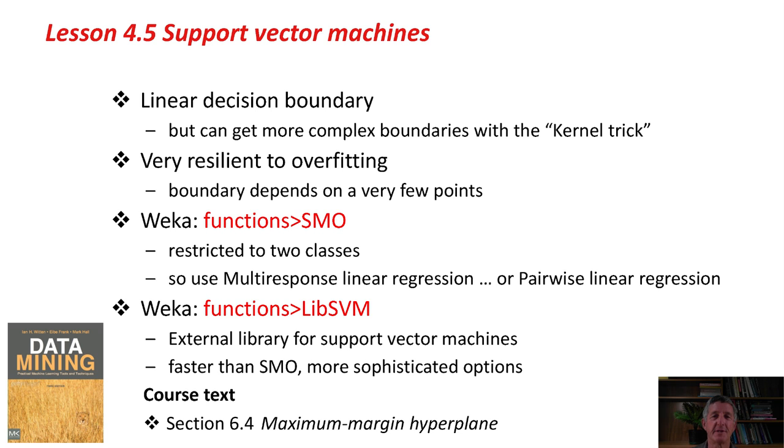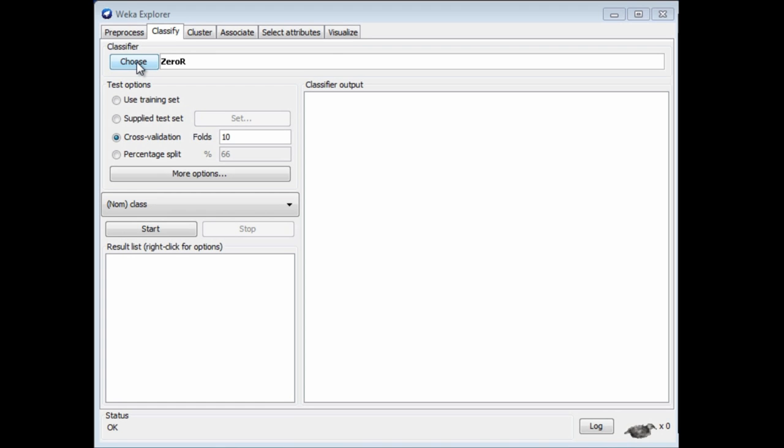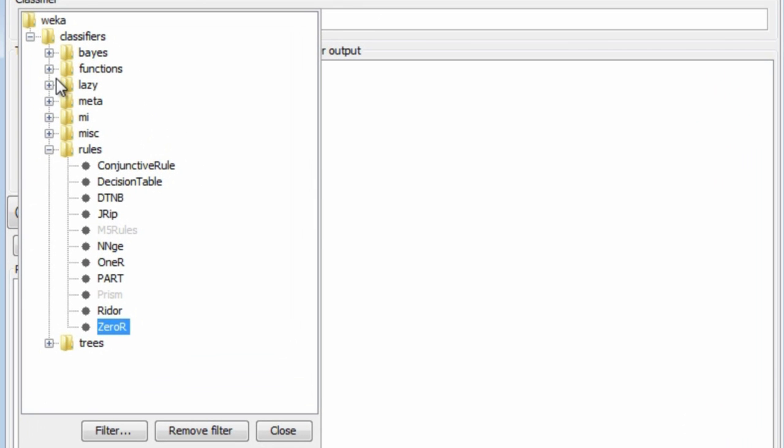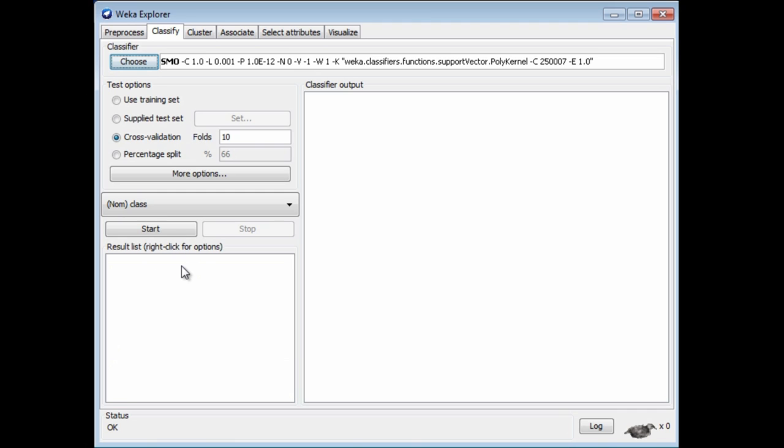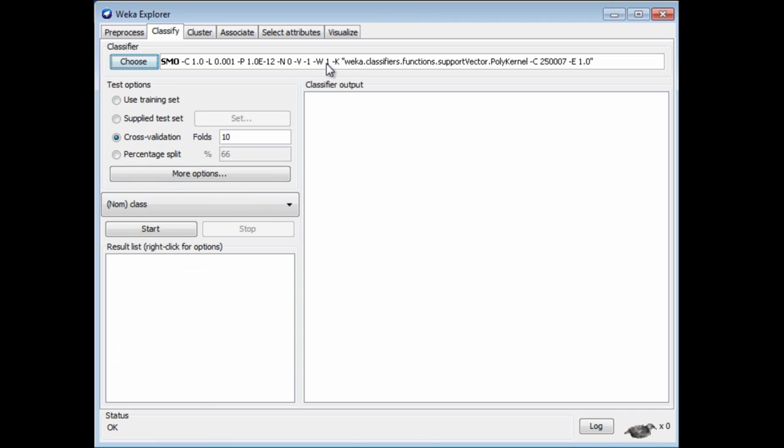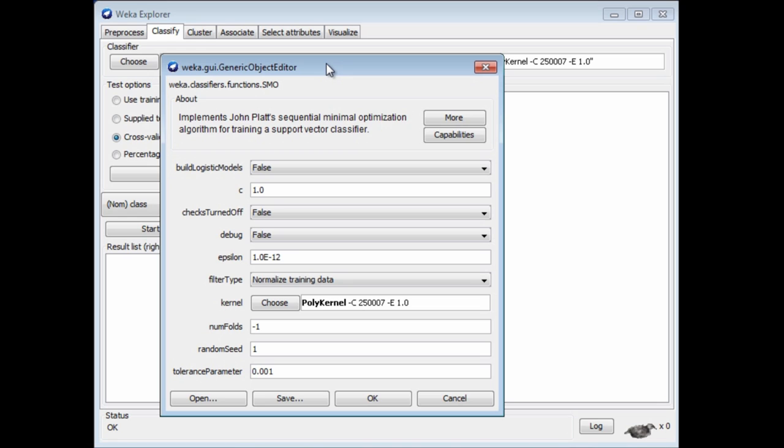In WEKA, there's a couple of implementations of support vector machines. We could look in the functions category for SMO. If I look in functions for SMO, that implements an algorithm called sequential minimal optimization for training a support vector classifier. There are a few parameters here, including, for example, the different choice of kernels. You can choose different kernels. You can play around and try out different things. There are a few other parameters. Actually, the SMO algorithm is restricted to two classes, so this will only work with a two-class data set.